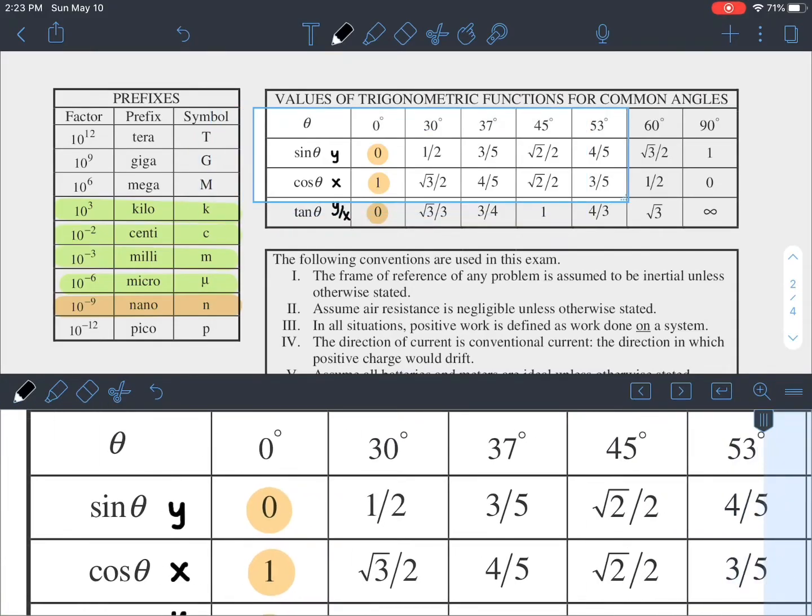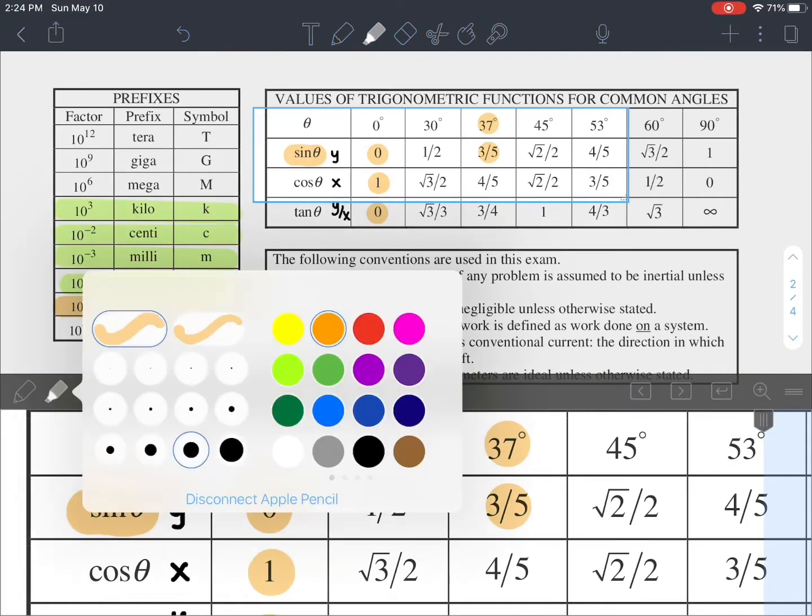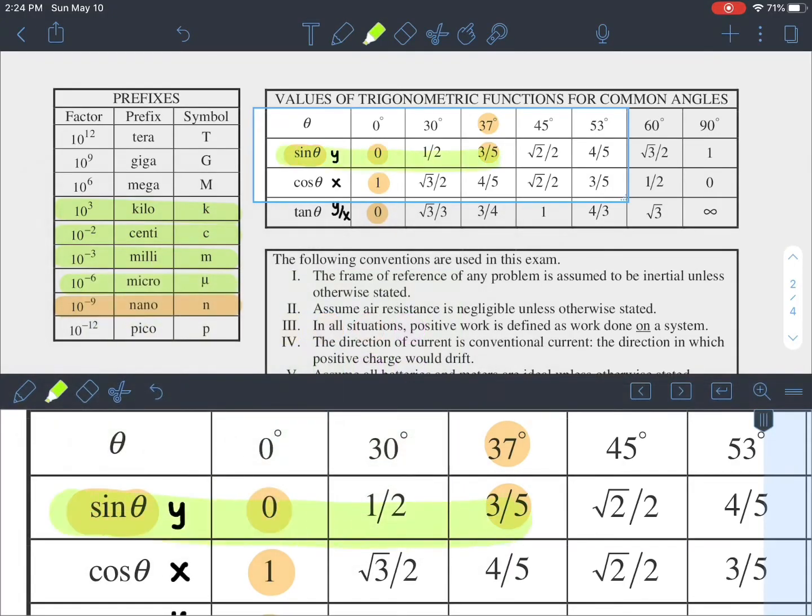For an exam like this, why would you need some angles? Well, what if you were looking for the y-component of a force and the angle was at 37 degrees? If you got that question, you would go, sine of 37? How am I supposed to do that? They said that we wouldn't need a calculator. Well, they'll give you 37 degrees. Look at where they intersect. At three-fifths. That's what it is.